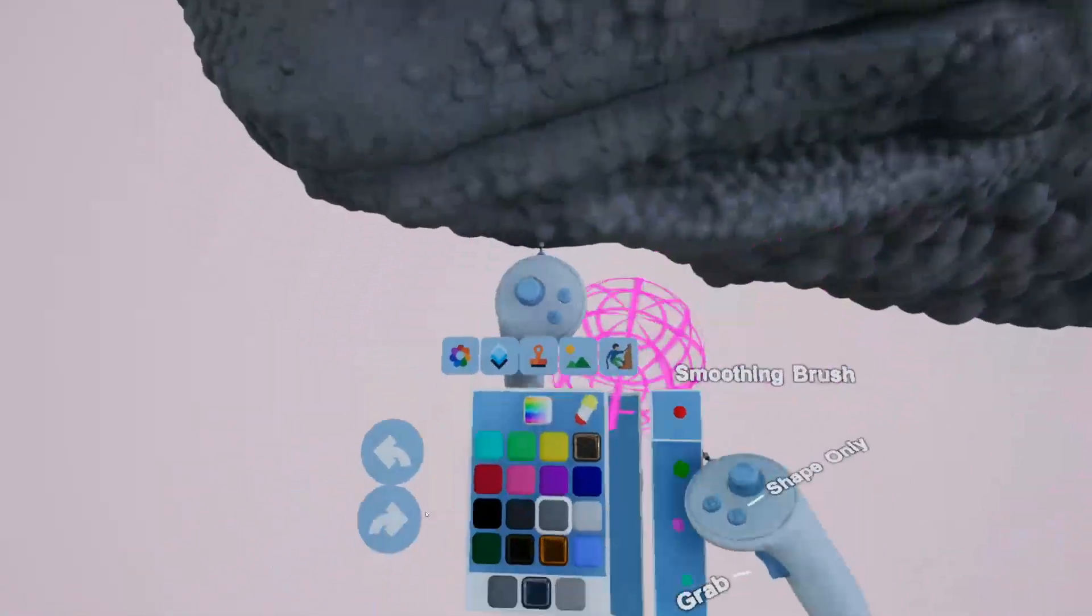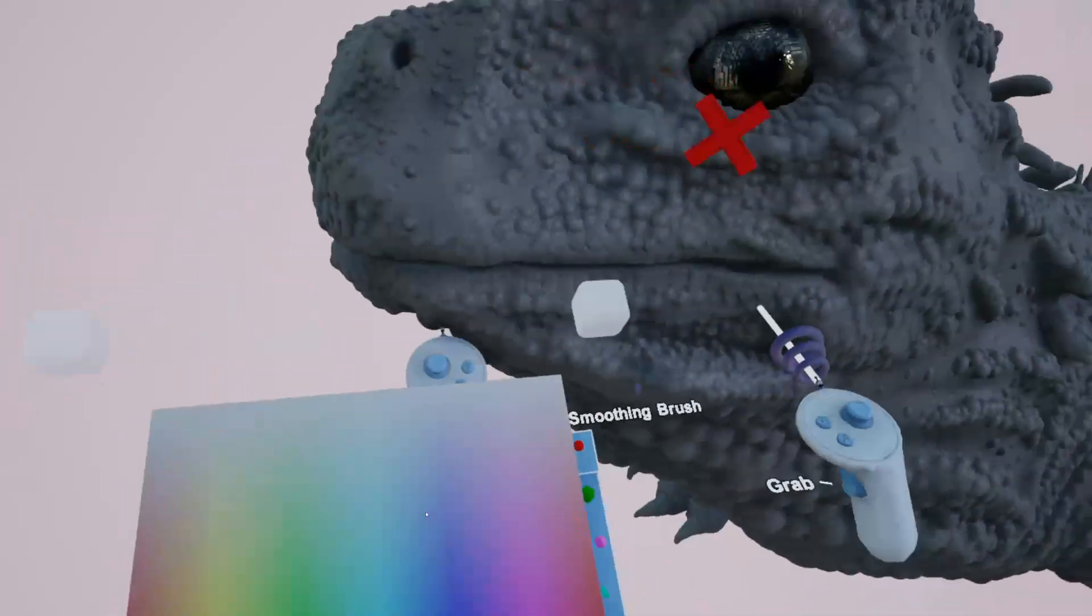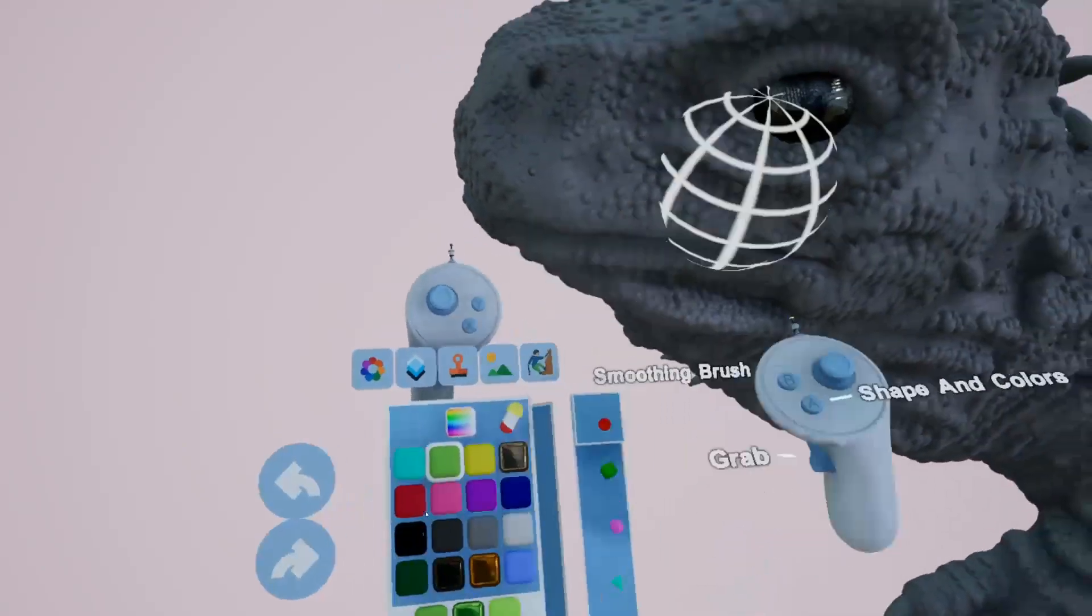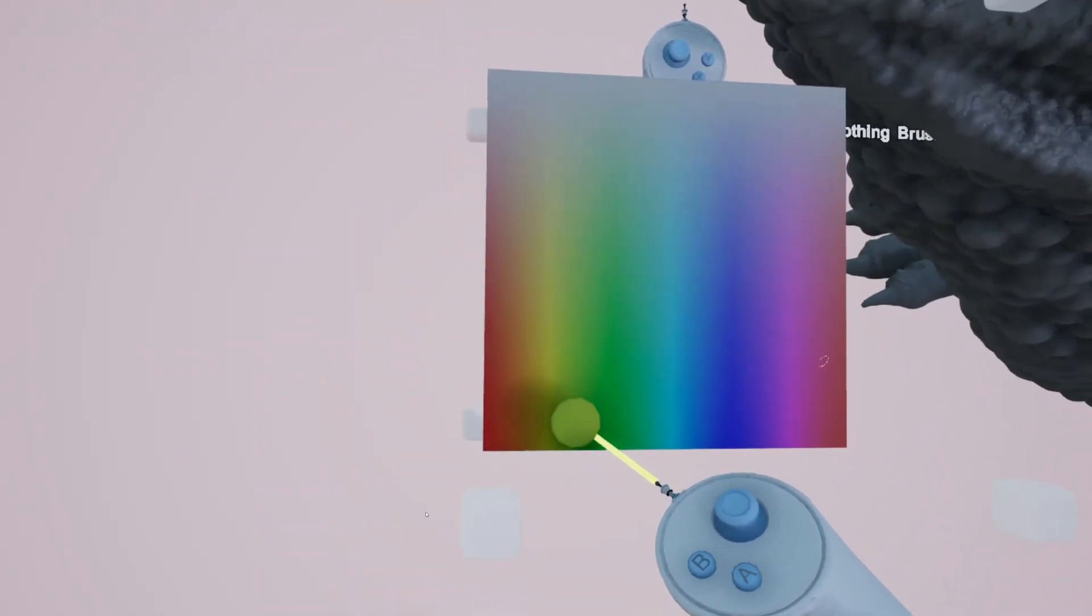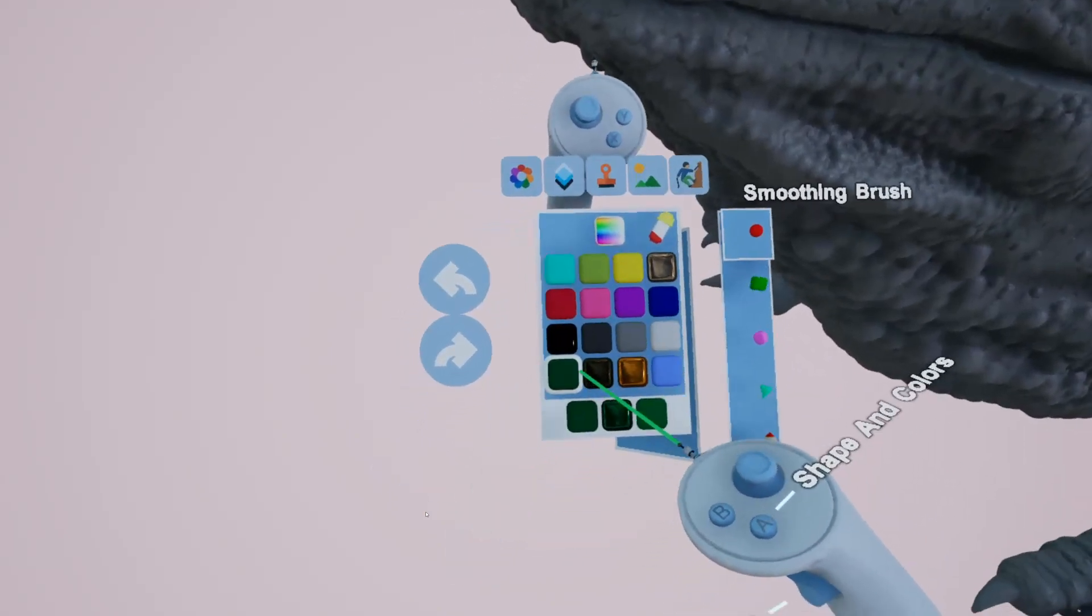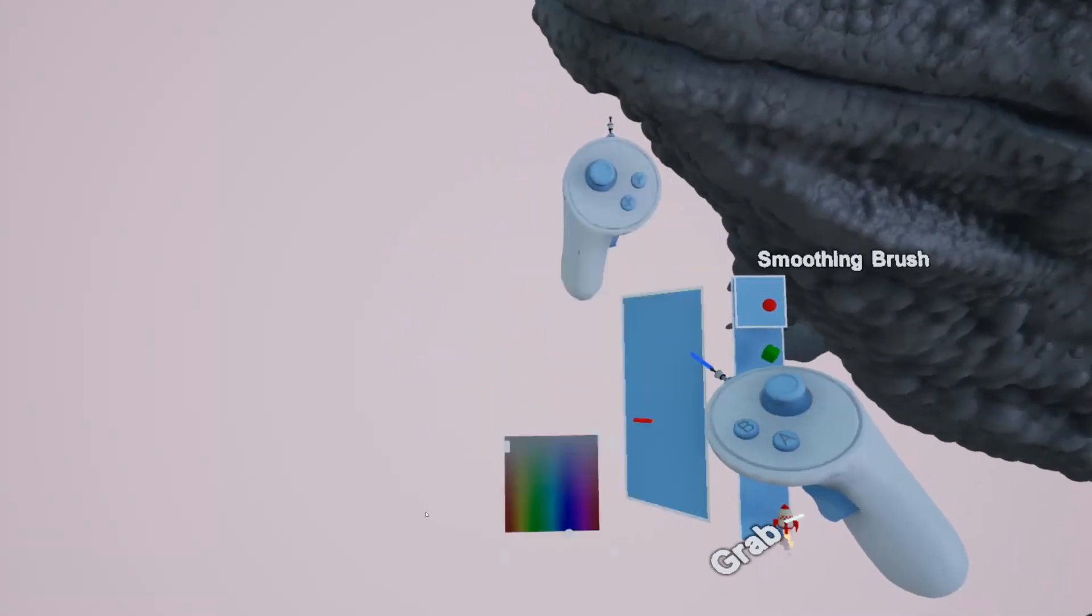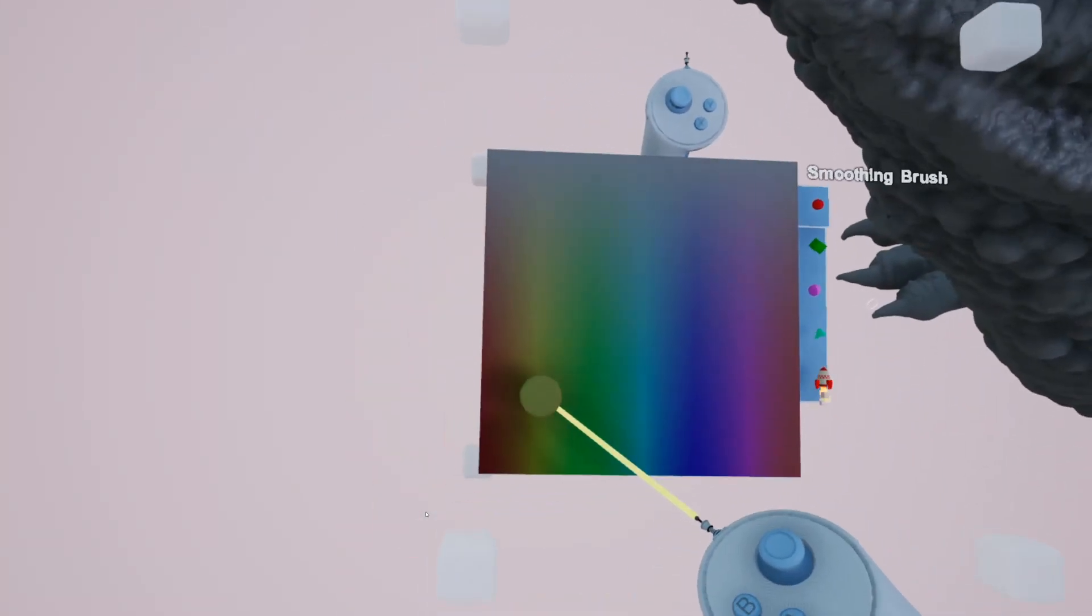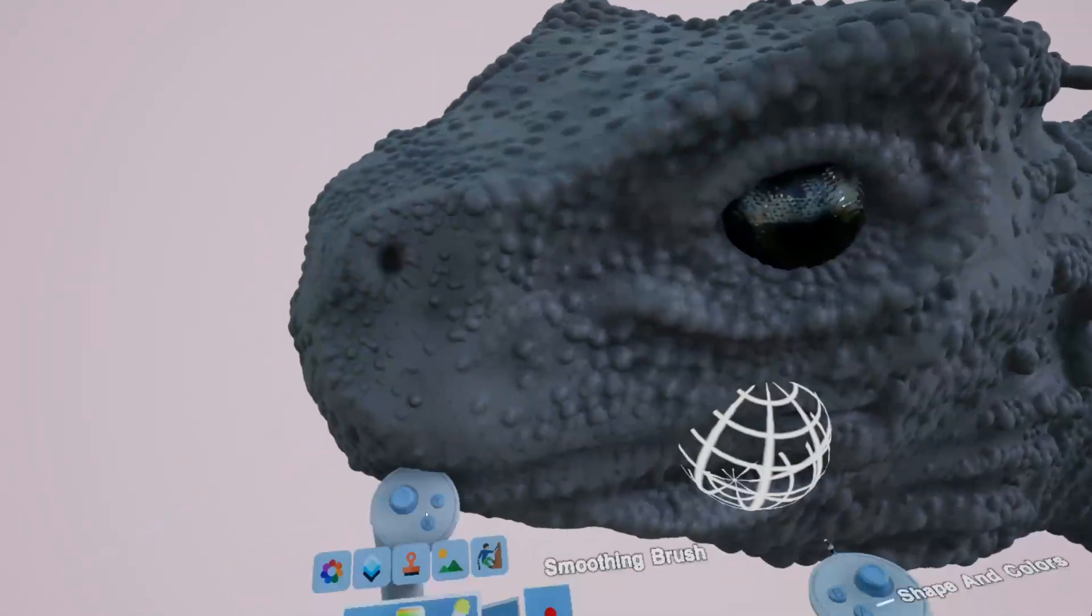So right, now we'll get on to the painting part of it. I'll try and find the right colors. Obviously yeah, look at pictures again to try and work out what colors you need. I'm just going to try and get the right green here. I'll get a slightly lighter green, so I usually start with the lighter colors first.